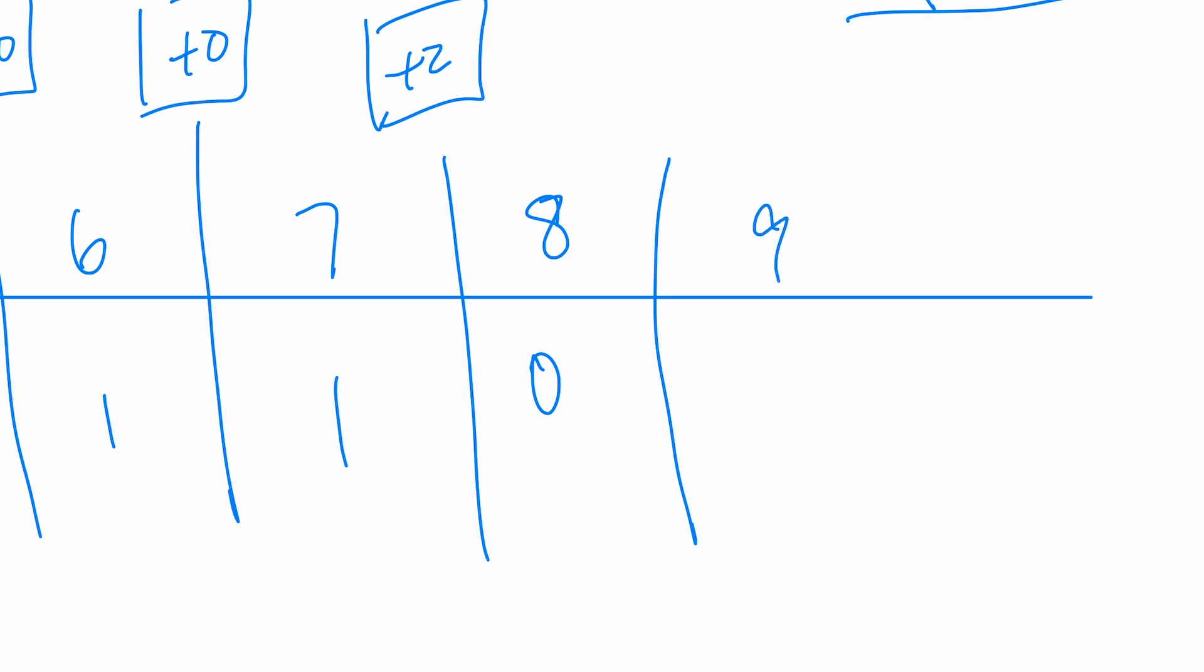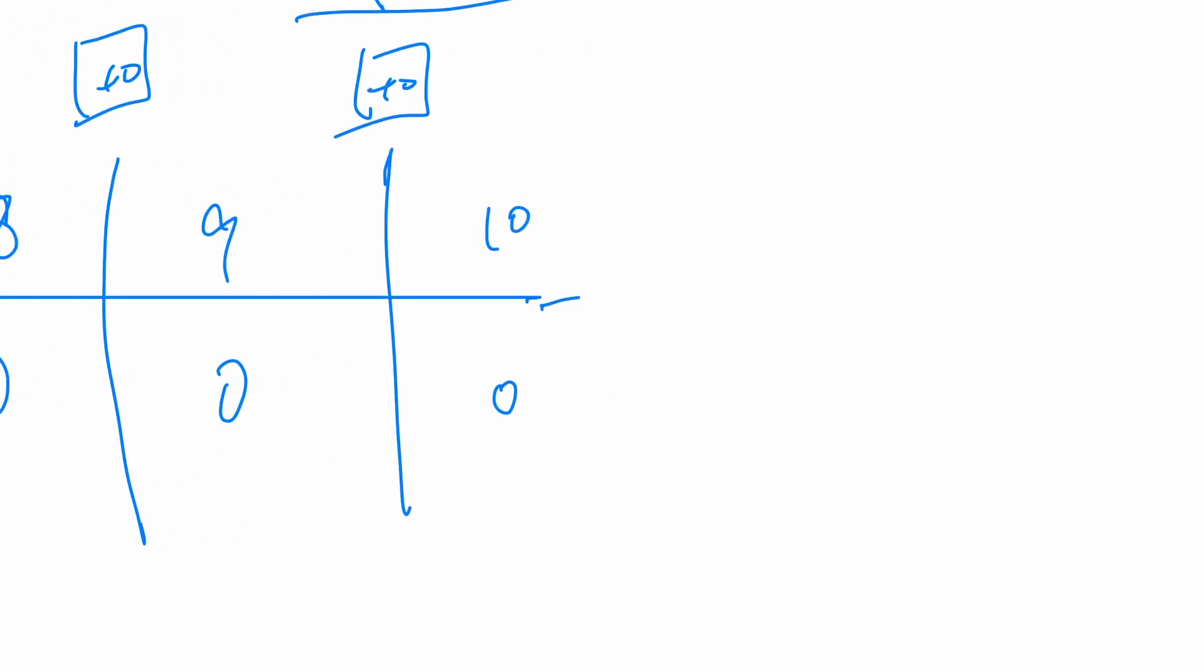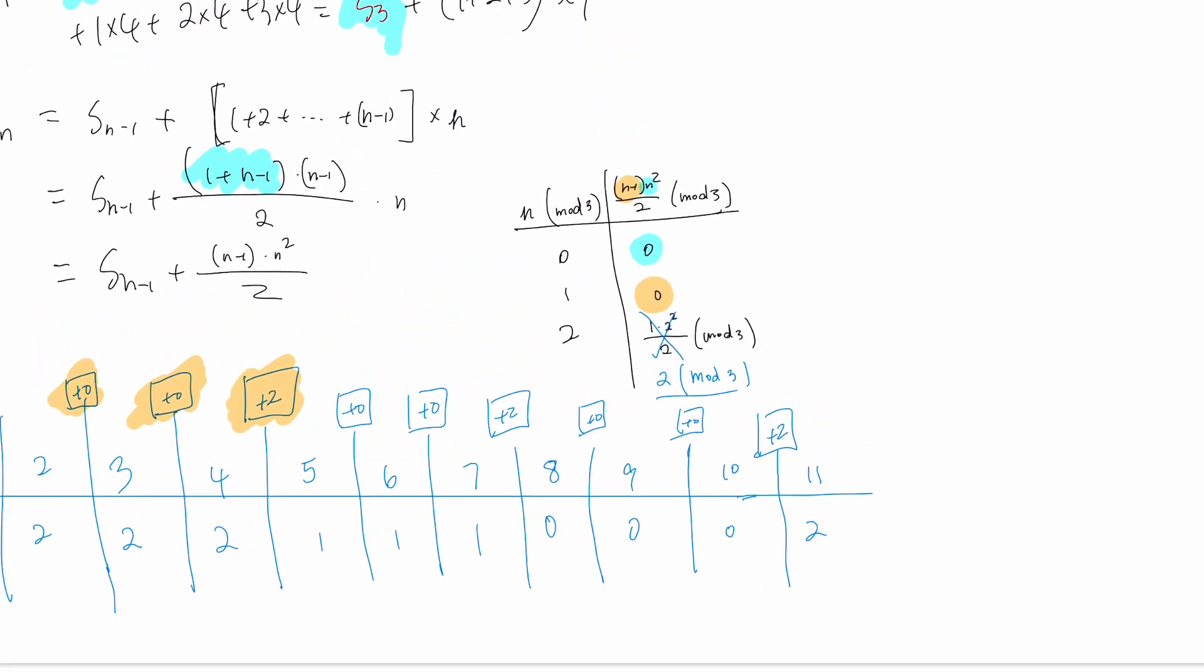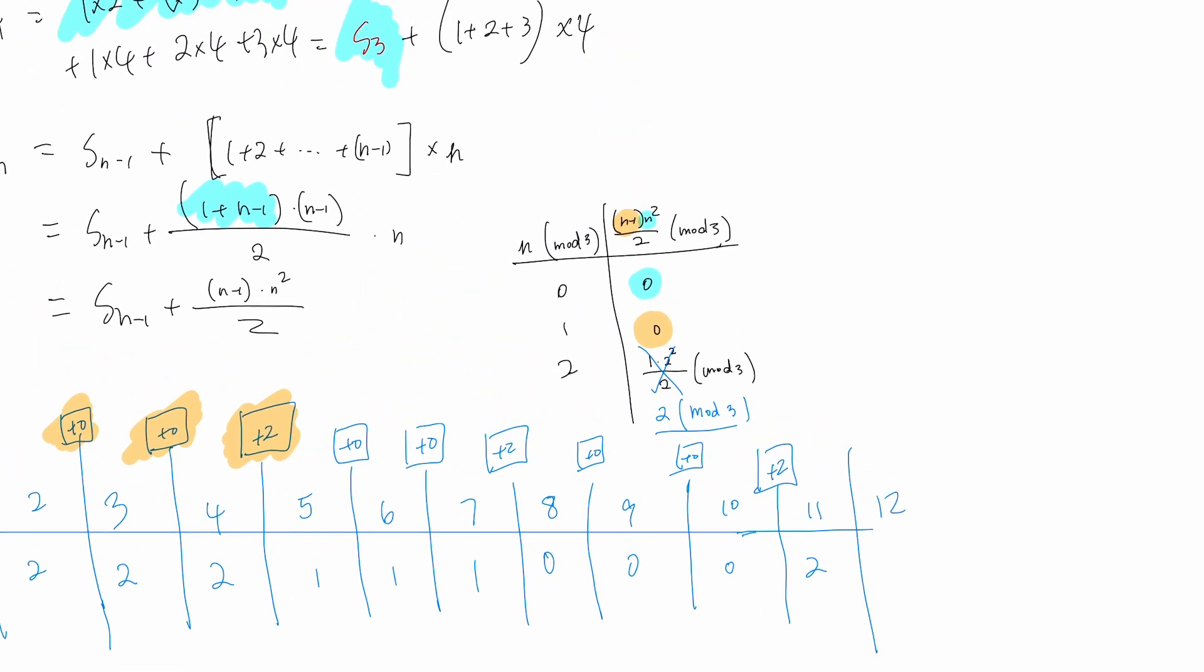From here we get 0. We have 9, we get 0. We have 10, we get 0, because it's all plus 0, plus 0. And for 11, that's going to be plus 2, and here comes 2 again. The next step, 12, is going to be plus 0 at the start of the new pattern.